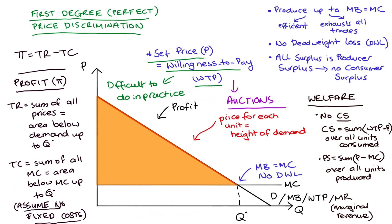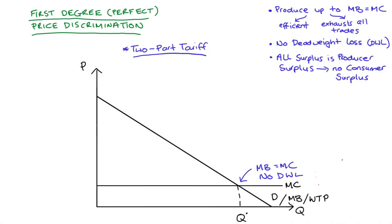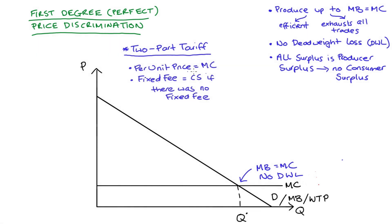Charging prices equal to willingness to pay is not the only way of perfectly price discriminating. The second way I'm going to describe is what we call a two-part tariff. A two-part tariff involves the firm setting two prices: one per-unit price equal to the marginal cost of production, but the firm also charges a fixed fee equal to the consumer surplus that the customer would have gotten if there was no fixed fee. The outcome in terms of output, welfare, and profit will be exactly the same as when we charged prices equal to willingness to pay.